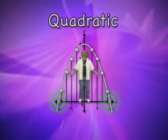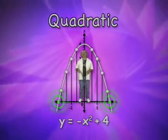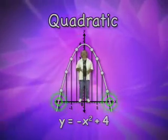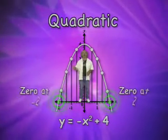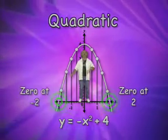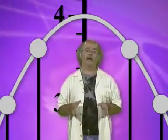So for this function, which is y equals negative x squared plus four, the zeros are negative two and two. The zeros are significant because they are the roots of the related quadratic equation, negative x squared plus four equals zero. So it's important that we can identify the zeros.